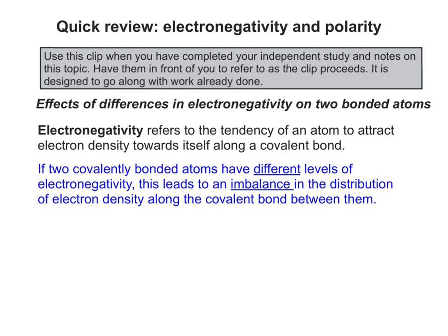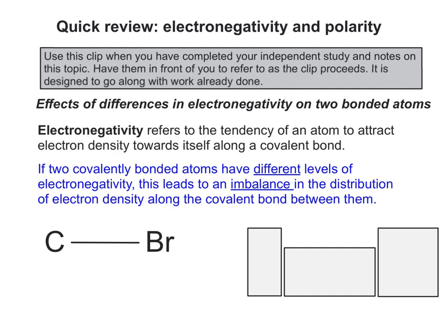If we think about two covalently bonded atoms having different levels of electronegativity, this leads to an imbalance in the distribution of electron density — the electron pair — along the covalent bond between them. Let's take two random atoms: a carbon atom and a bromine atom. I've put an over-exaggerated bond between them so we can think about where the shared electron pair is going to sit.